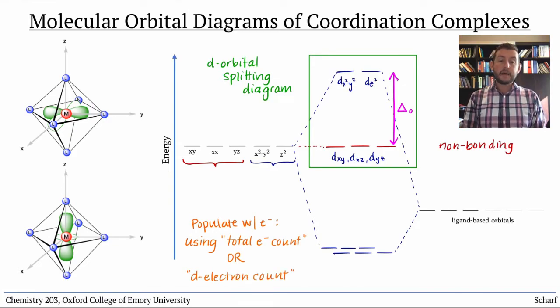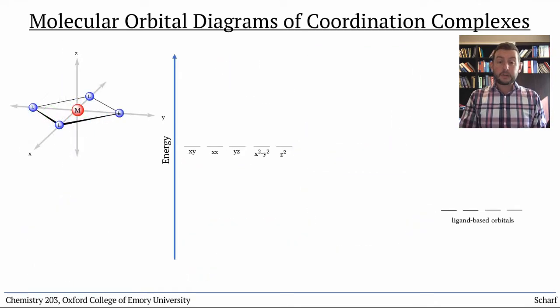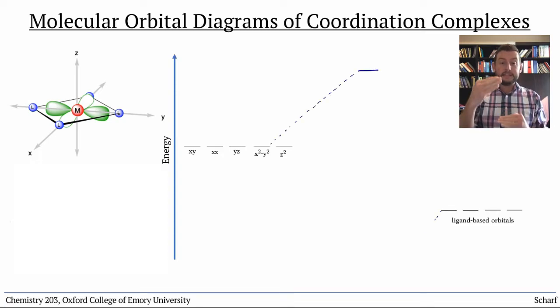The same method can be applied to any geometry. For square planar, all four ligands are oriented exactly along the x and y axes, so the brunt of the overlap is felt by the dx²-y² orbital. In fact, the splitting of this orbital is exactly the same as it was for an octahedral complex, Δₒ.